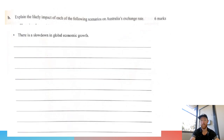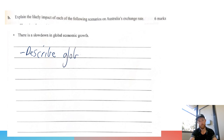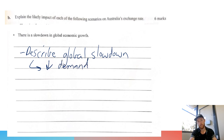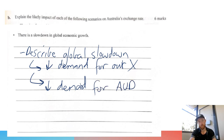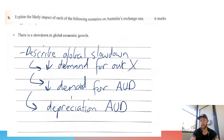The second part of 1b: how a slowdown in global economic growth is going to affect Australia's exchange rate. You'd describe global slowdown and what that means — that is going to lead to a decrease in demand for our exports. If there is less demand for our exports, that means less demand for the Australian dollar, which is going to lead to a depreciation of the Australian dollar. That's all good for three marks there. So you've got an appreciation on the first part and a depreciation here — and then we're going to get into some more exchange rate questions, because there are a lot of them this year.